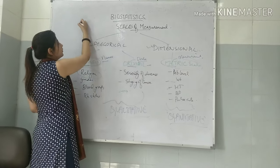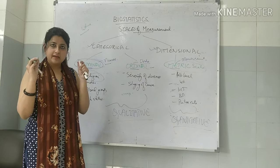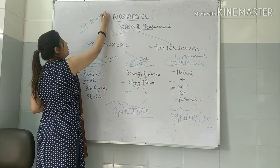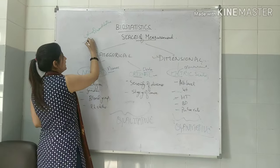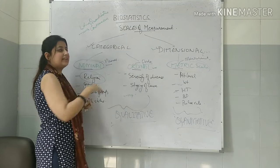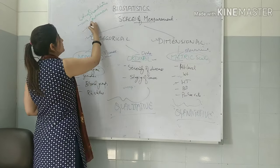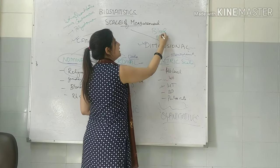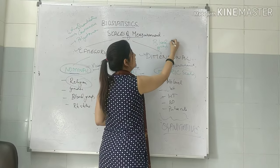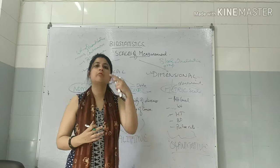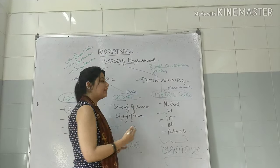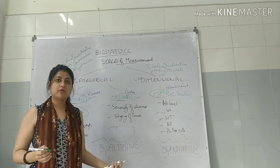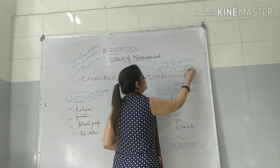Another MCQ revision: for weight — it is a quantitative variable, a continuous variable, and a polytomous variable. For blood group — it is a qualitative variable (we cannot exactly measure 'how much' A positive a person is), it is a discrete variable (fewer values), and it is a polytomous variable (A, B, AB, O — more than two values). You could be given any variable and asked to mark the correct option.